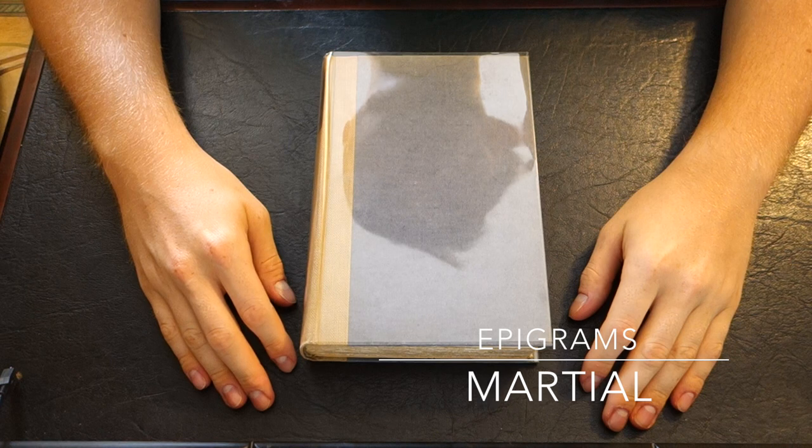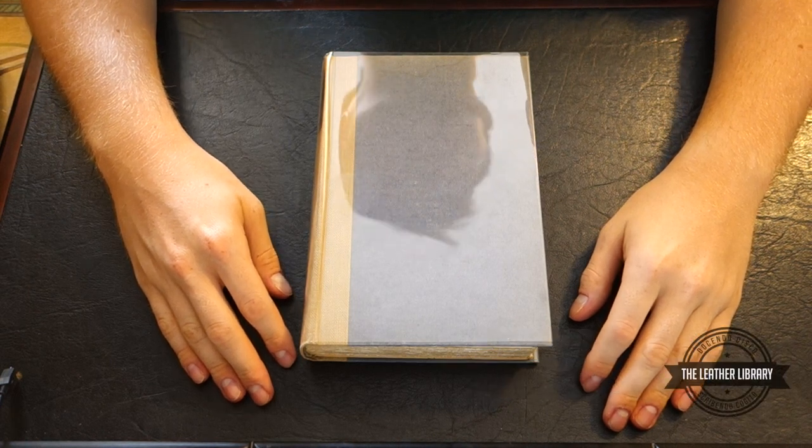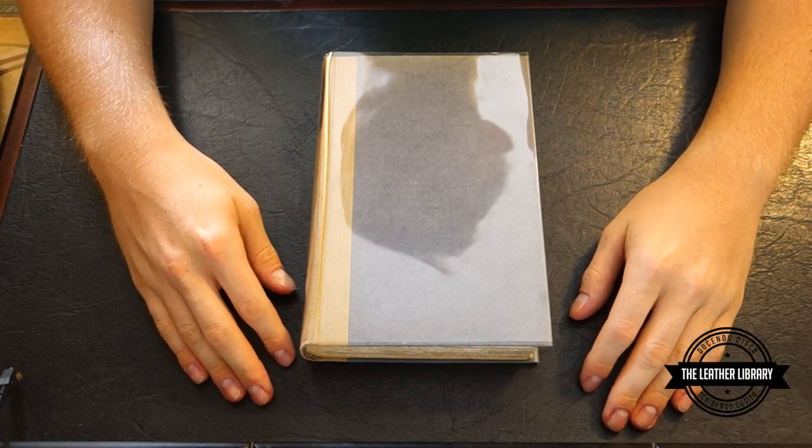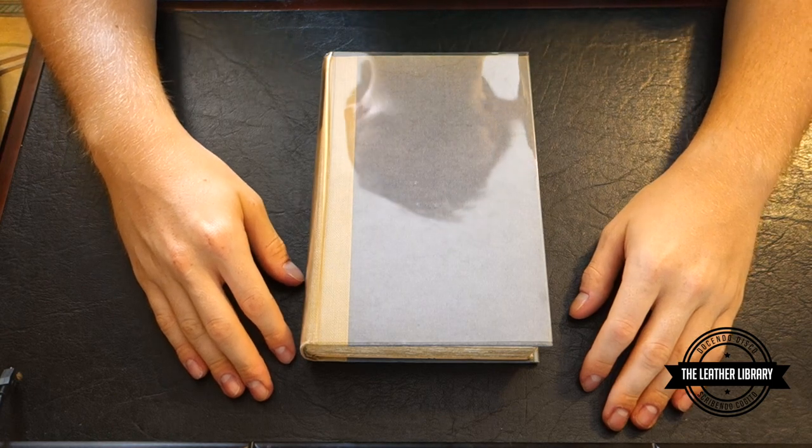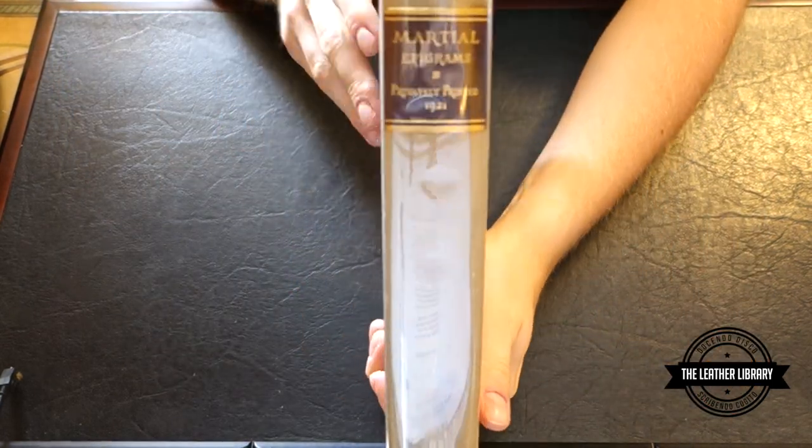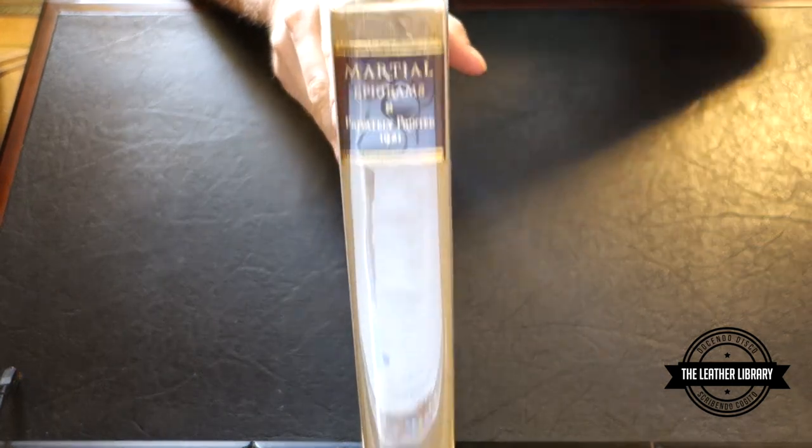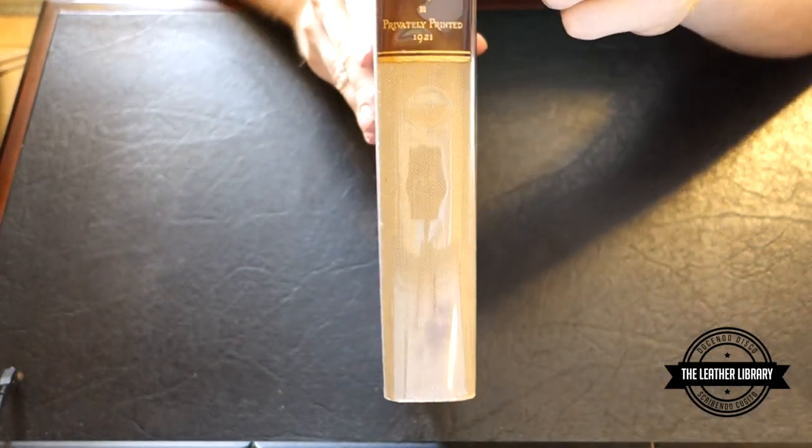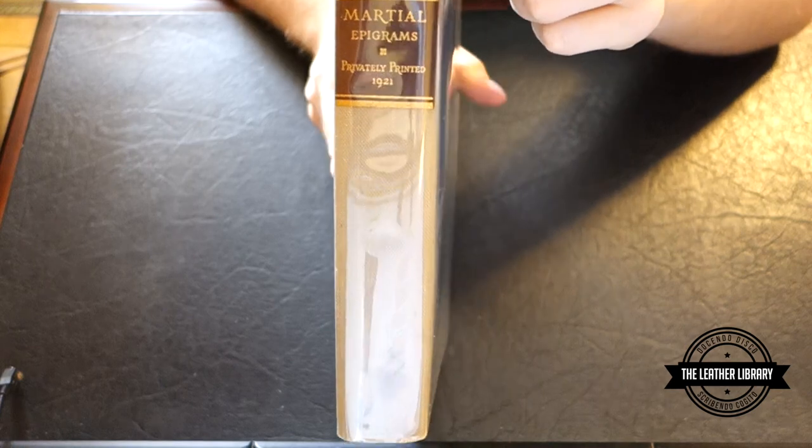Welcome back YouTube, today we have another antiquarian book review. This particular volume I got from AbeBooks.com. This is Marshall's Epigrams, that is the Roman poet Marshall. As you can see here it says privately printed from 1921.